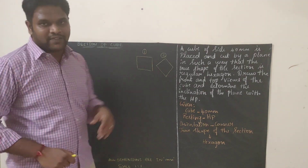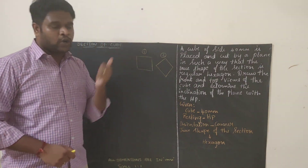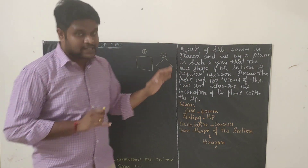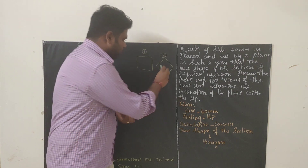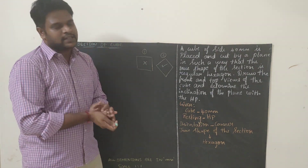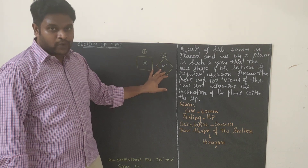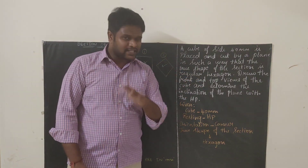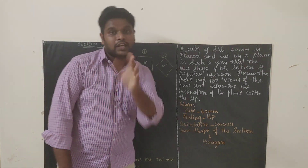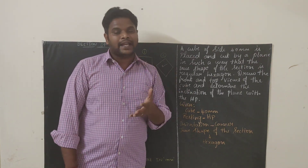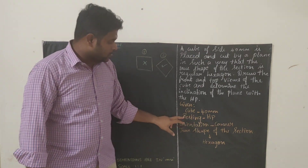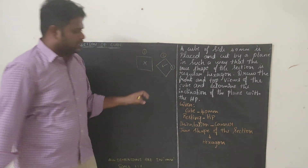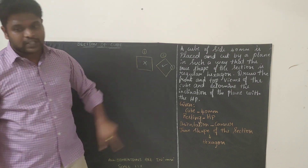We have two options for drawing the square base. If we want to get the true shape of the section as a hexagon, we should go with the diamond-shaped square — the corner orientation. We should not draw the other orientation. The base should be in HP with corner orientation, and we are going to proceed with only this type of square.